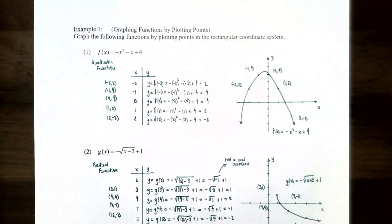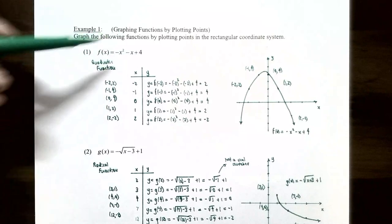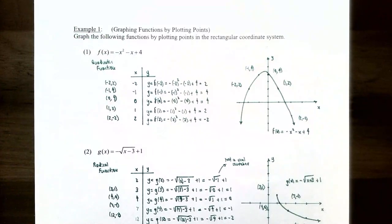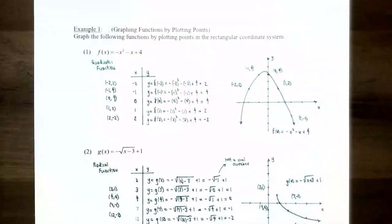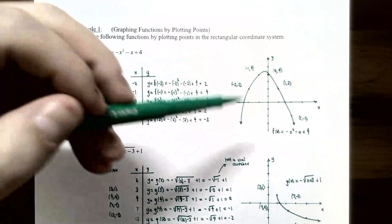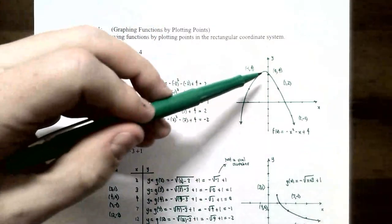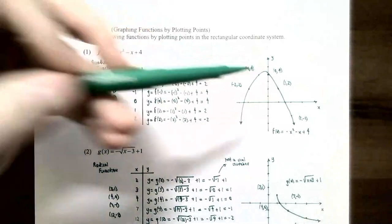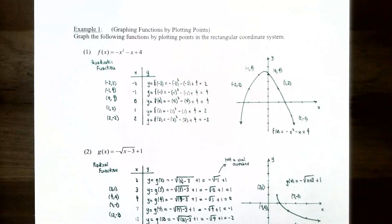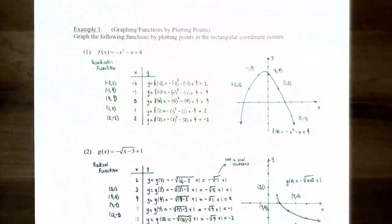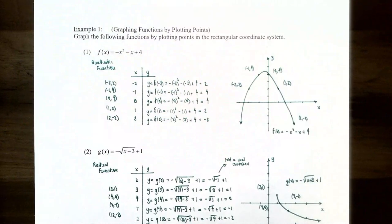You can plug in any x value into this quadratic function because its domain is the set of all real numbers. When you plot the five points and connect them, you get an upside-down u-shape with a highest point called the vertex. A graph of a quadratic function is called a parabola, and this is what the graph of f(x) = -x² - x + 4 looks like.